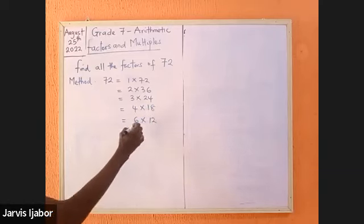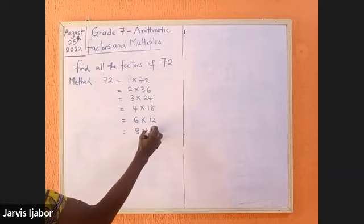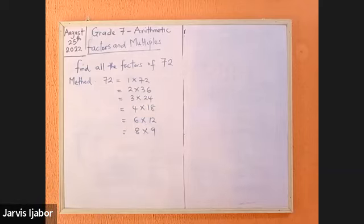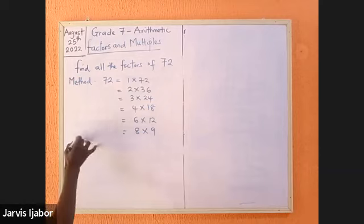And the next one will be 8 times 9. Is there another possibility? The next one will take me back to the twelfth, so with this method I've exhausted all the possibilities. What I simply need to do is to write them, so factors of 72 will simply be listed.